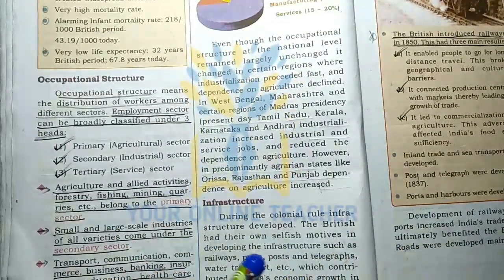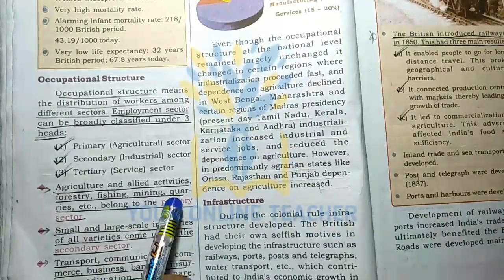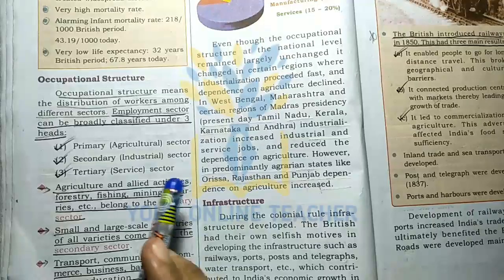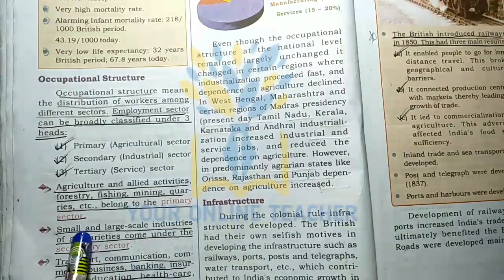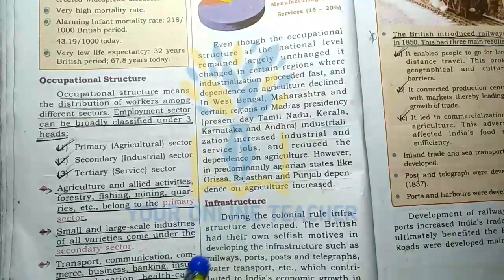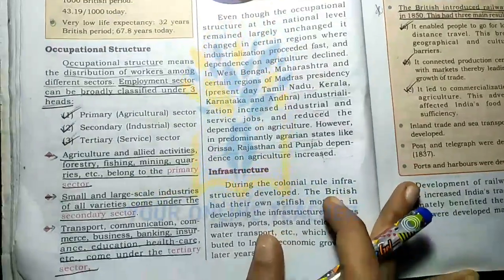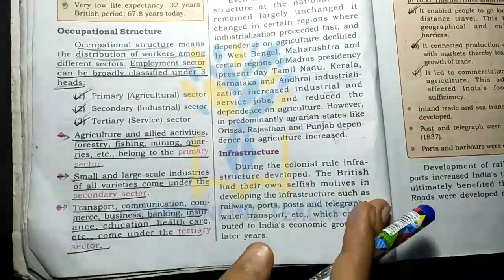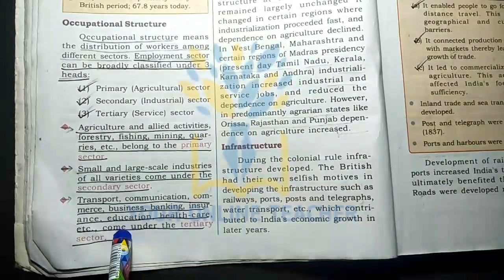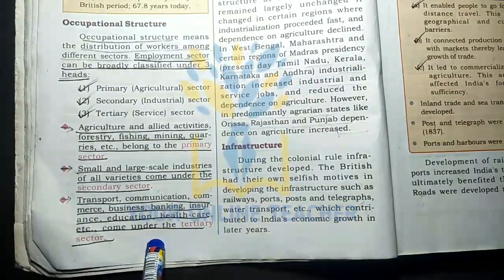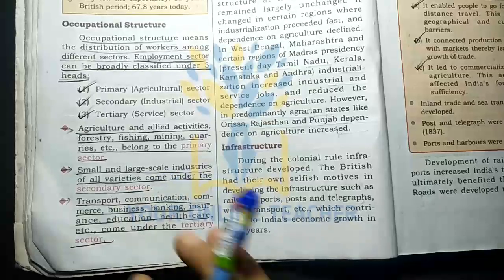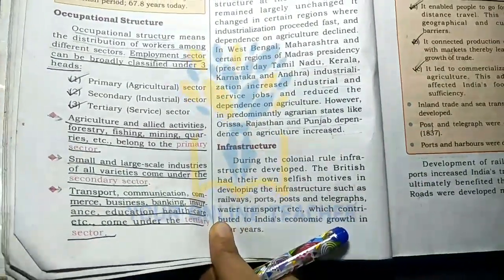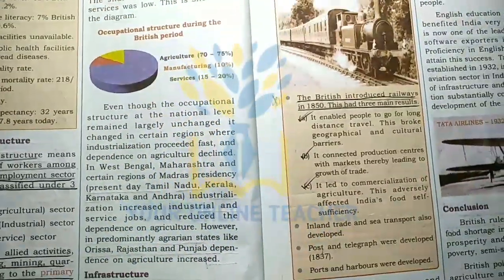The primary sector includes agriculture, fishing, mining, and quarrying. The secondary sector is called the industrial sector — small and large-scale industries. The tertiary or service sector includes transport, communication, commerce, business, banking, insurance, education, and health care.